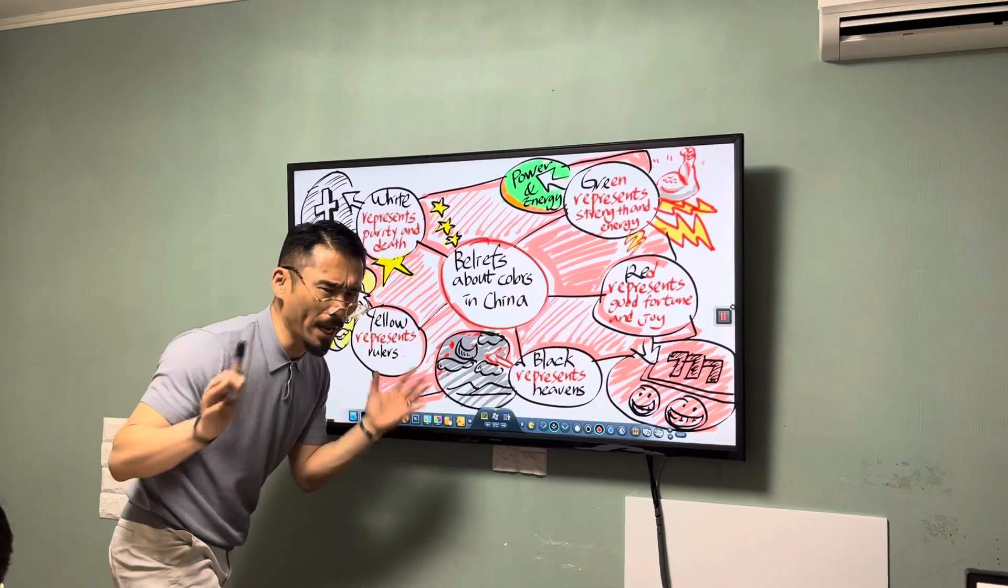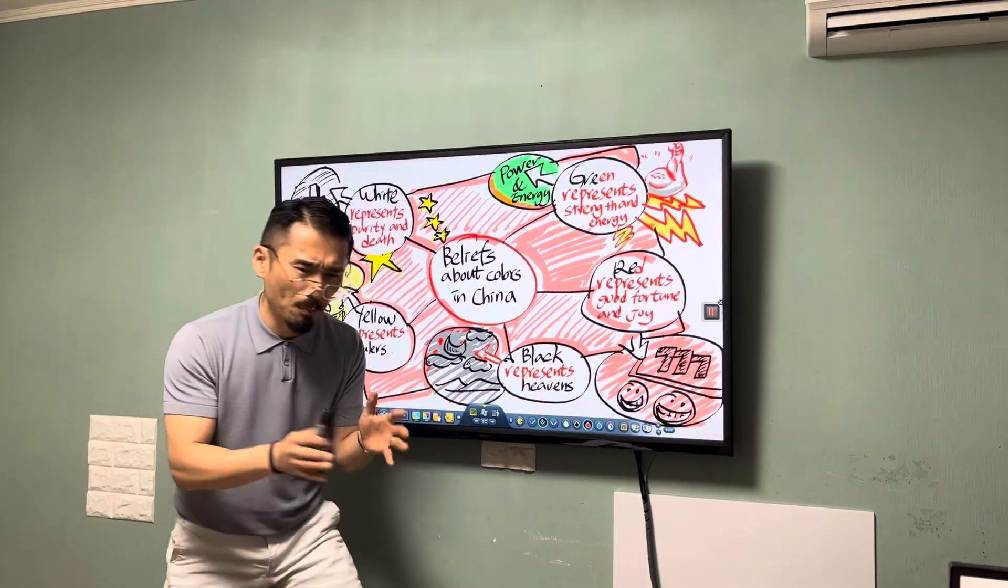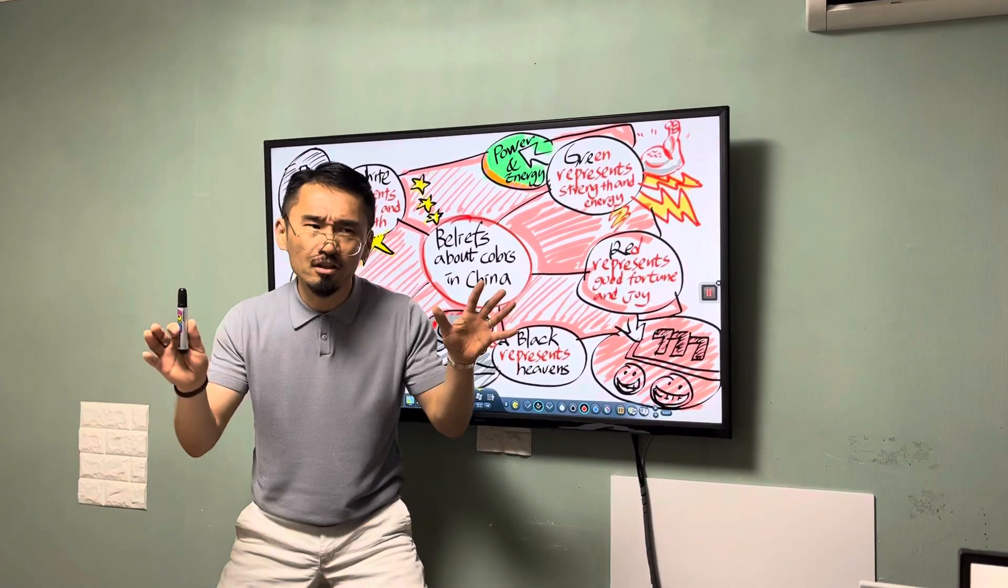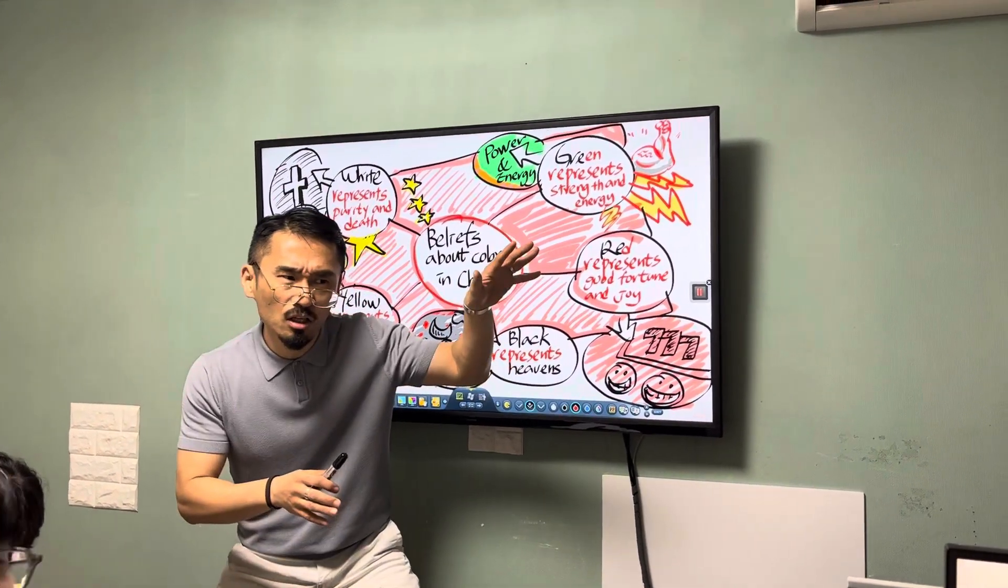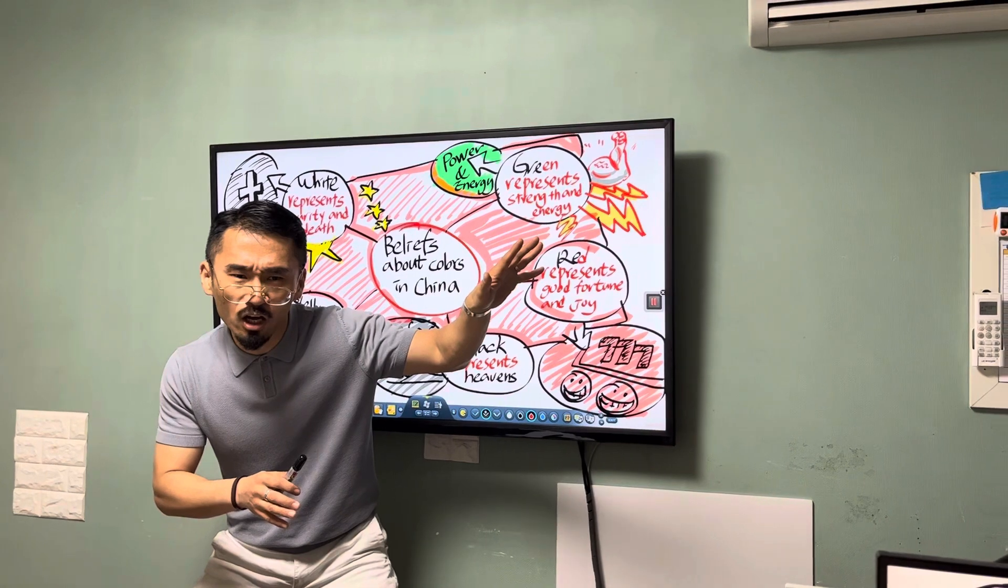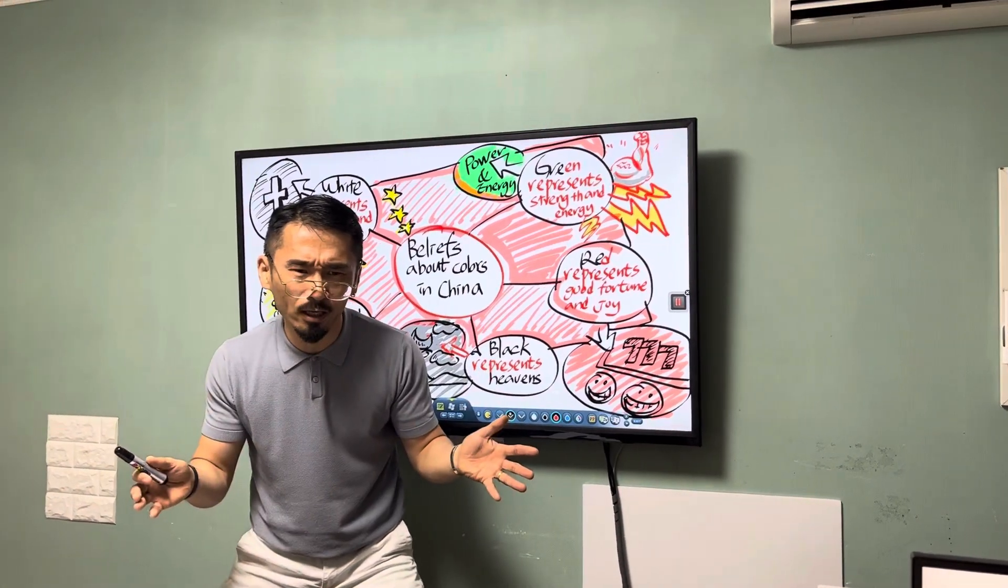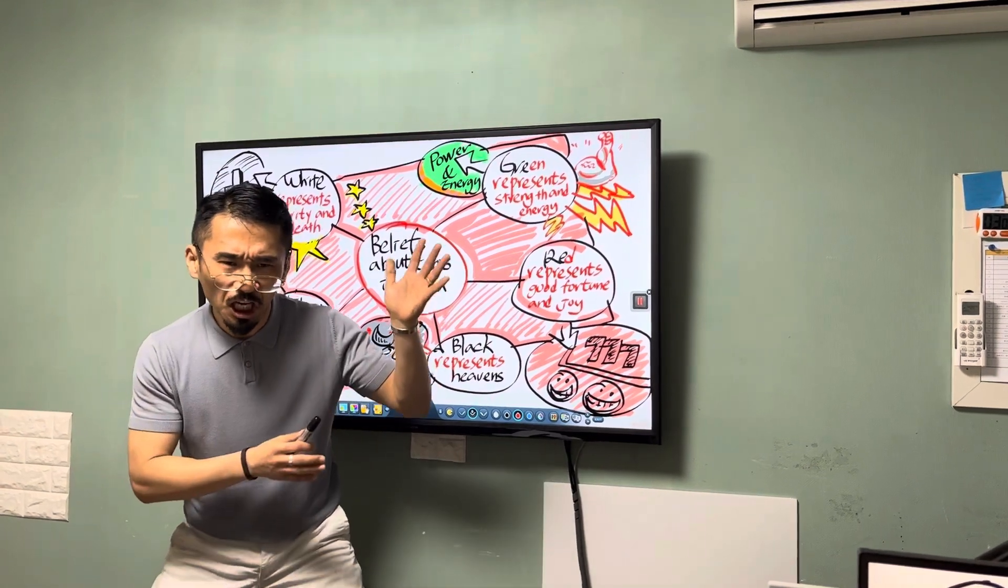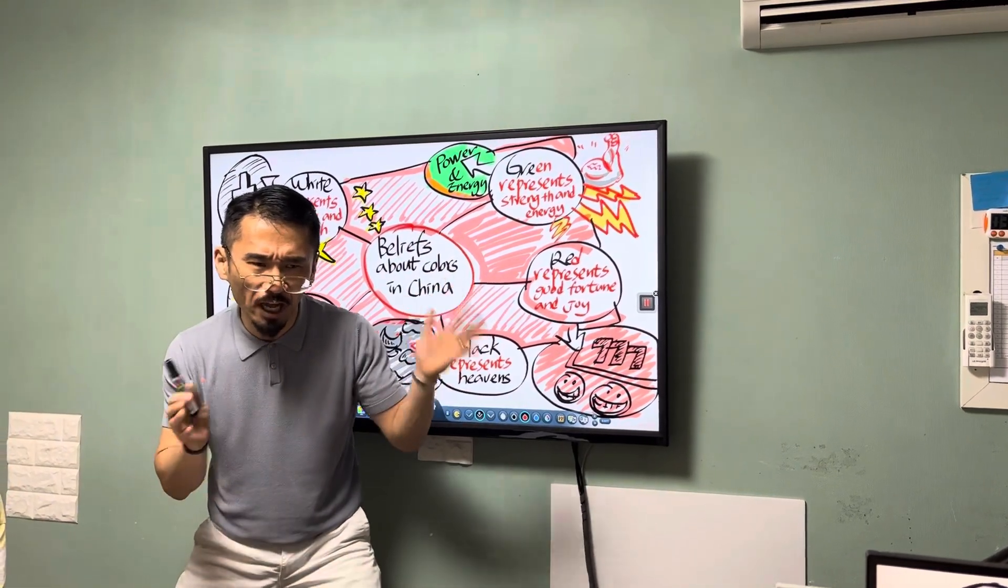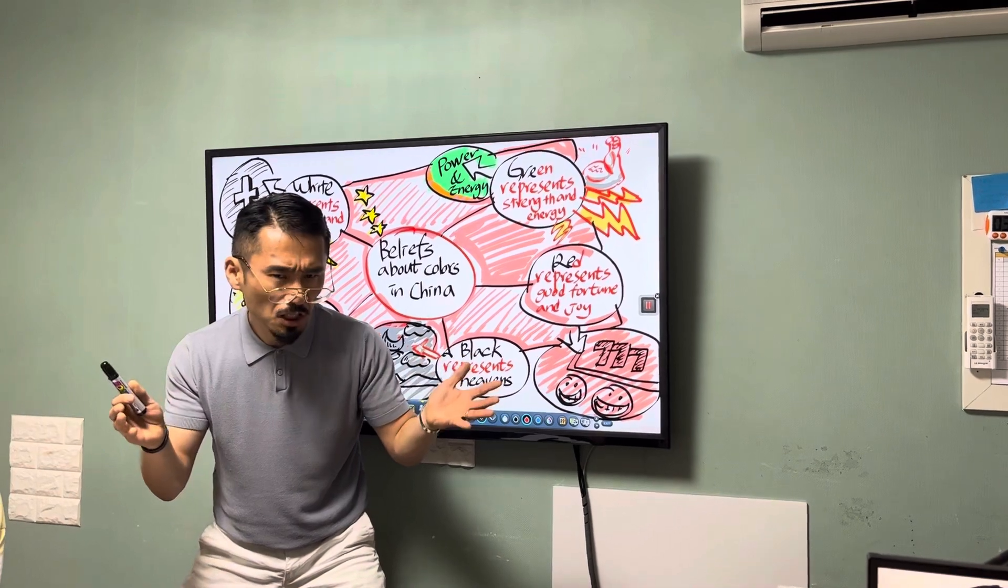Black represents heavens. Long ago, people in China noticed the northern sky was strangely black and they thought something was going on in the night sky. So black represents heavens.